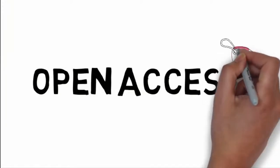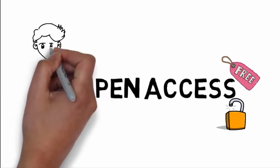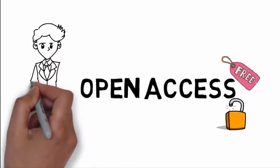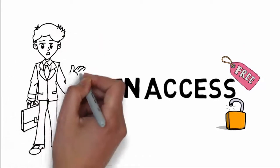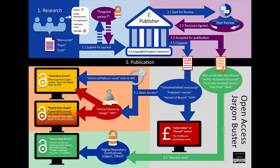Open access refers to free and unrestricted access to research literature, but open access has many elements and variations. When making your research open access there is a lot to consider. The open access jargon buster is a great resource developed by Sarah Humphries from the Bodleian Social Science Library. By working through this jargon buster we can begin to unravel the different routes to making your research open access.